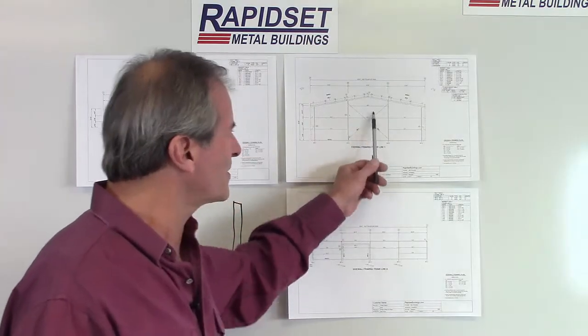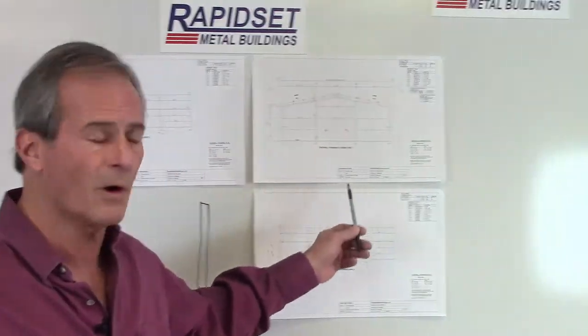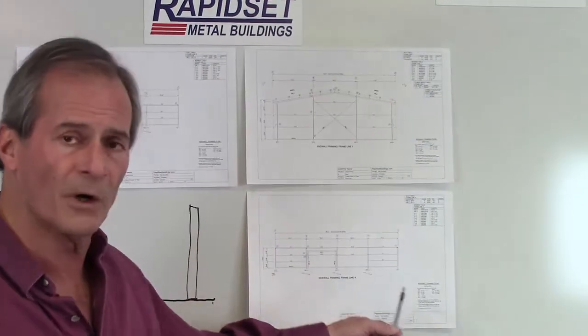Now, this is our typical bracing, be it an end wall or on the side wall. It's our cross bracing. Now this can come with cable, it can come with rod. It depends on your seismic conditions, the height of the building, and the wind force that the building is seeing.